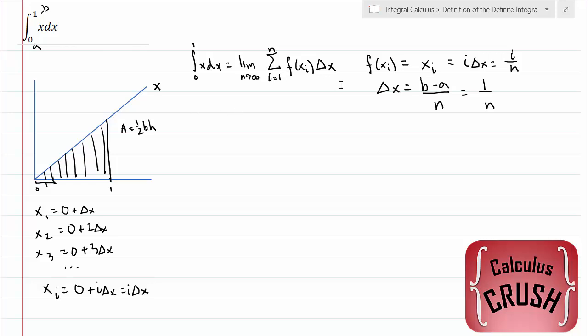So now that we have expressions for f of xi and delta x, we can substitute those in and solve this problem. So we have the limit as n approaches infinity, the sum of i equals 1 to n. Now f of xi is just i over n times delta x, which is 1 over n.